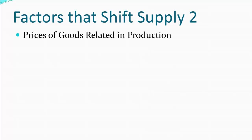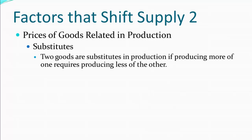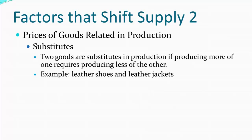Another factor that can shift supply is prices of goods that are related in production. Here we have two possibilities. One is that two goods are what we call substitutes in production. Two goods are substitutes in production if producing more of one requires that we produce less of the other. This is typically the case if they use a lot of the same set of resources. For example, we might look at leather shoes and leather jackets — both require the use of leather. So if I'm going to produce more leather shoes, I must by necessity produce fewer leather jackets, which means these goods are tied together in their markets.